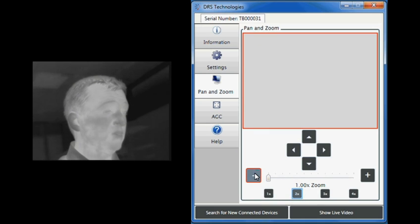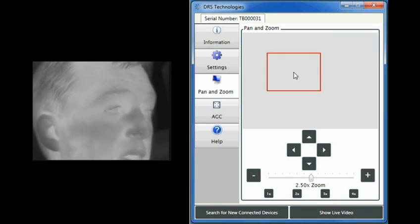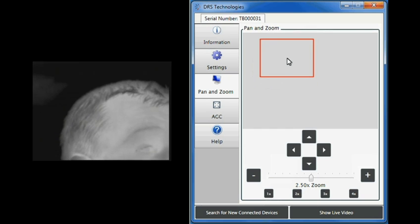After you've selected the level of zoom, you can drag the region of interest, or ROI, around with your mouse. Use the arrow buttons to fine tune specific areas of the image you want for the ROI.